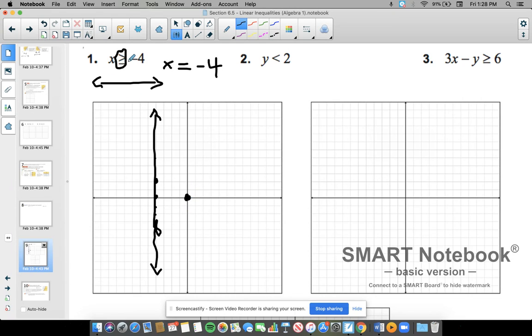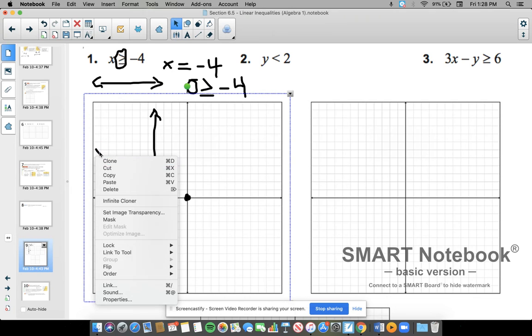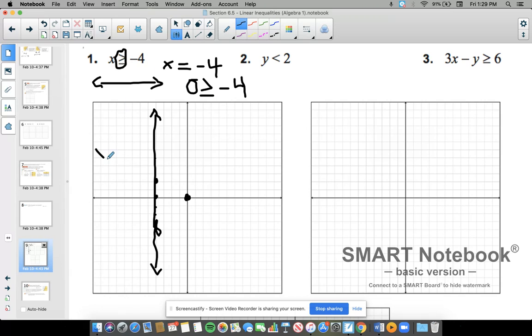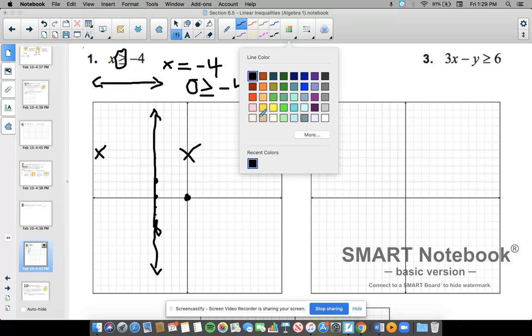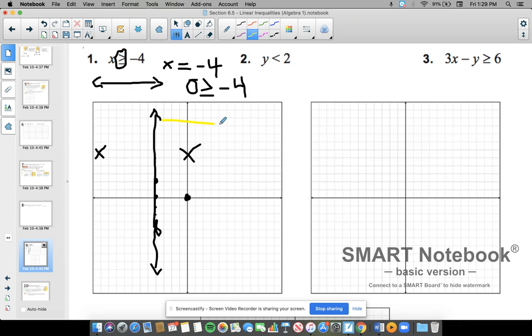Zero is greater than or equal to negative four. Is that true? If it is true, you shade where that dot is. If it is not true, you shade the opposite. So there's two options here. There's this side and this side. So this point, zero is greater than or equal to negative four. That is true. So I will shade the side where that solution is. So I'll shade over here.